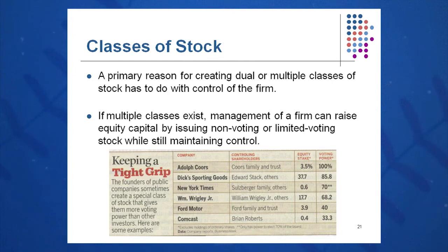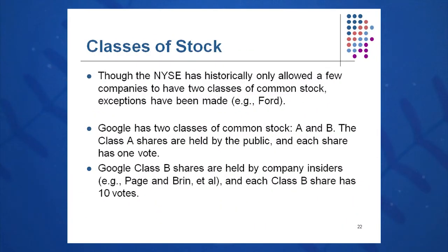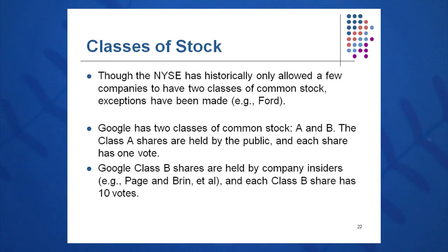There are often different classes of stock — Class A, Class B, Class C — and the primary reason is to control the firm. For instance, the Ford Company has Class A and Class B shares, where Class B shares are for voting purposes, allowing the Ford family to maintain majority control. Other companies that do this include Adolph Coors, Comcast, and Wrigley. Similarly, Sergey Brin and Larry Page at Google have Class A shares for the general public and Class B shares for insiders, where each Class B share has 10 votes — giving them enormous decision-making power.